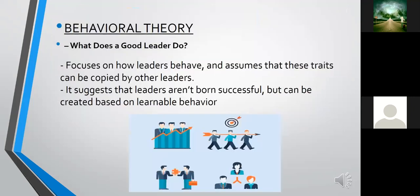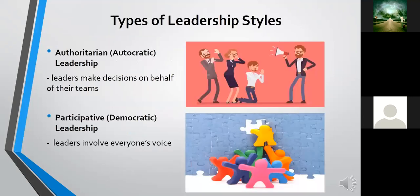The last organizational leadership theory is the behavioral theory. It focuses on what a good leader does — how leaders behave — and assumes that these traits can be copied by other leaders. It suggests that leaders aren't born successful but can be created based on learnable behavior.